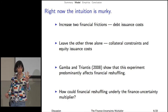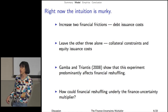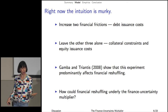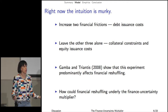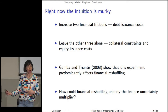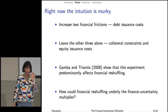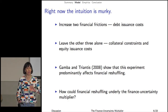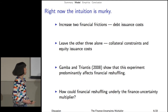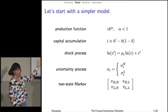They have five financial frictions and they tighten down two of them — the issuance costs on debt and equity. There's a related paper by Gamba and Triantis, and they show that in this kind of framework, what happens is that there's some financial reshuffling. So you then ask: how can this financial reshuffling cause an uncertainty-finance multiplier? That's what I want to go into, and I'm going to do so using a very, very simple model. For those of you who like words, there are words. For those of you who like math, there's the math.